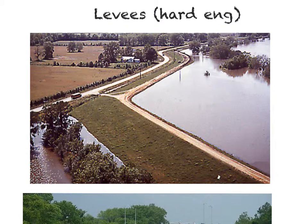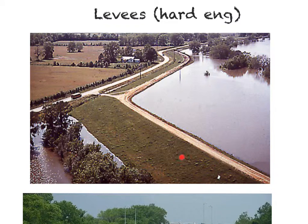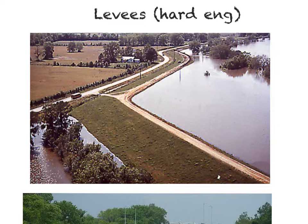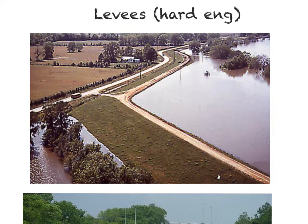The first hard engineering strategy relates to levees. We know from previous work on rivers that levees are naturally occurring features you can see here running alongside the river. Levees are caused by the flooding of the river depositing the largest material either side of the river channel. These are hard engineering strategies because they are enhanced or modified by man.